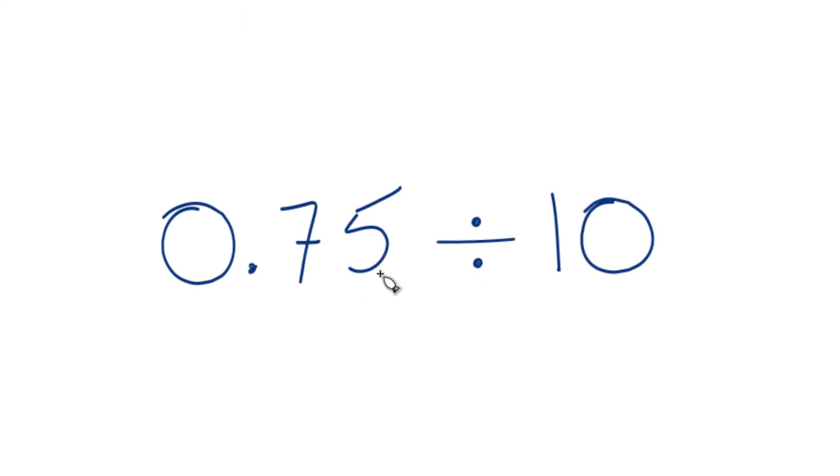So if we want to divide 0.75 here by 10, there are two ways to do it. One is just to think of it as 0.75 over 10 like this.